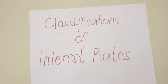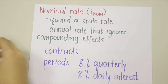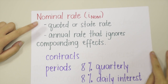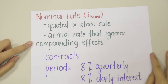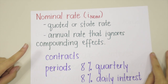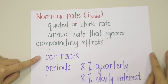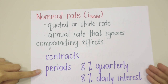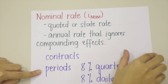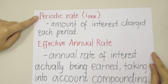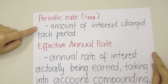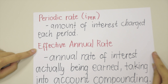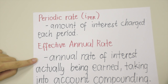For the classifications of interest rates: First, we have the nominal rate, also called the quoted or stated rate — an annual rate that ignores compounding effects. Nominal rates are stated in contracts, and periods must also be given; for example, 8% quarterly or 8% daily interest. Next is the periodic rate, which is the amount of interest charged each period. Last is the effective annual rate — the annual rate of interest actually being earned, taking into account compounding.